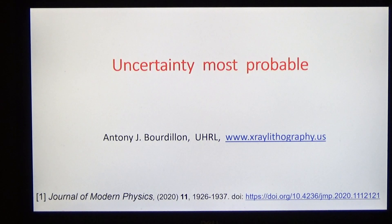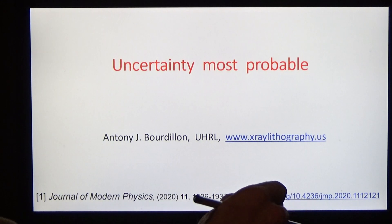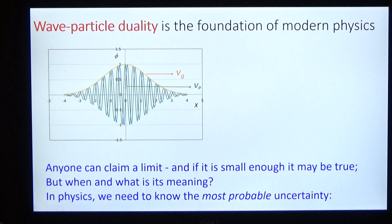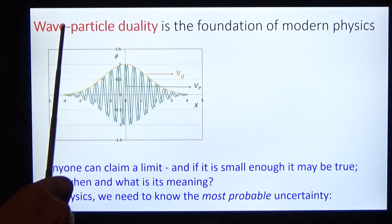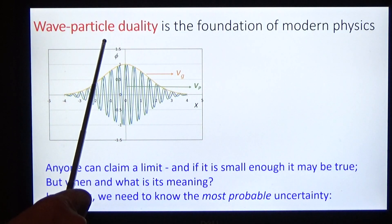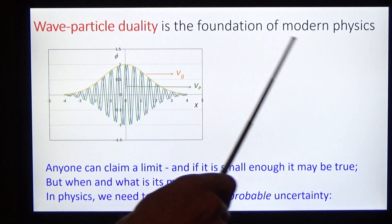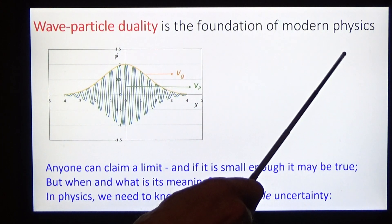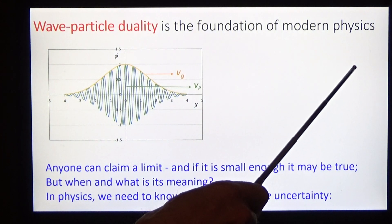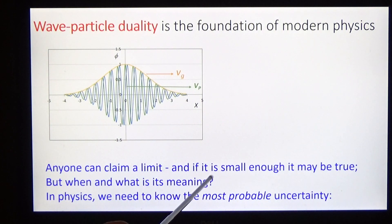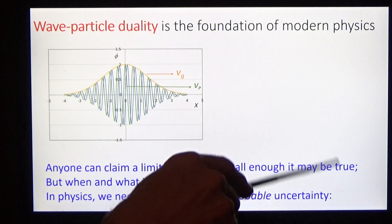What is uncertainty? It is a property of wave-particle duality, and this is the foundation of modern physics. We are interested in the most probable uncertainty.